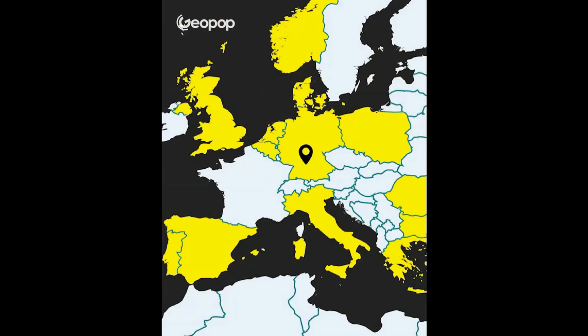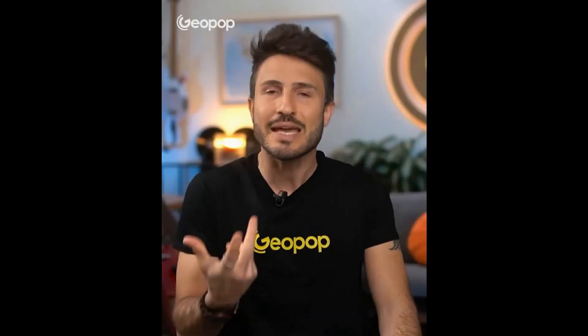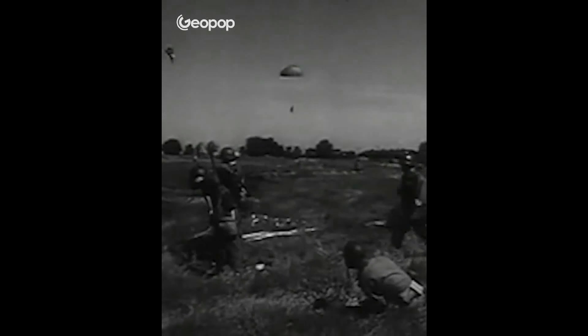In questo momento il più alto numero di basi si trova in Germania, che ne ha almeno 123, e in Giappone, che ne ha almeno 113. Ma perché? Germania e Giappone sono i due principali paesi sconfitti durante la Seconda Guerra Mondiale e perciò, dal punto di vista americano, erano e sono da controllare con particolare attenzione. Inoltre, stare in Germania e Giappone era ed è utile per contrastare la Russia e la Cina, che sono i due principali rivali geopolitici degli Stati Uniti.